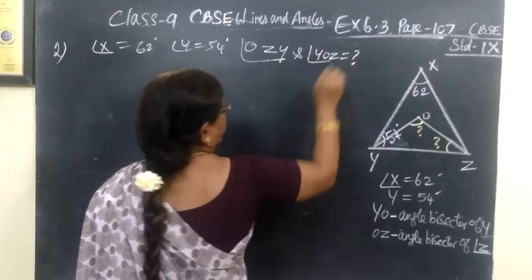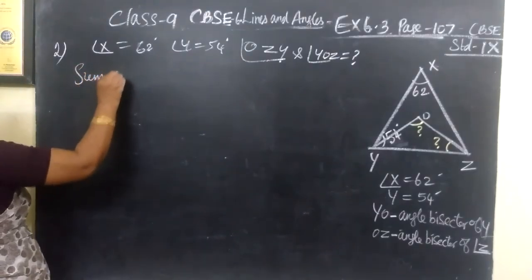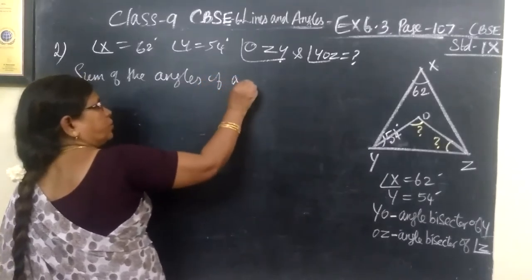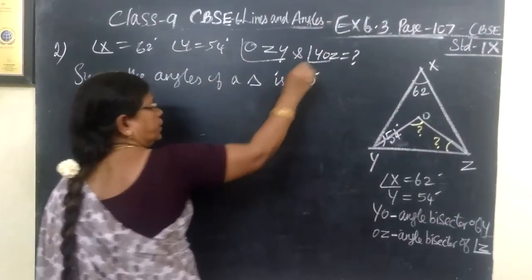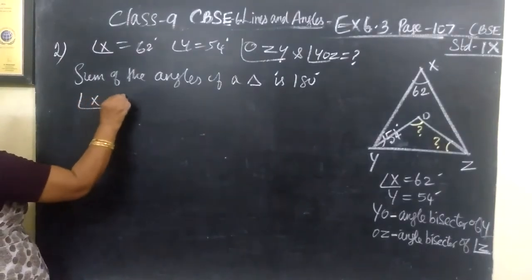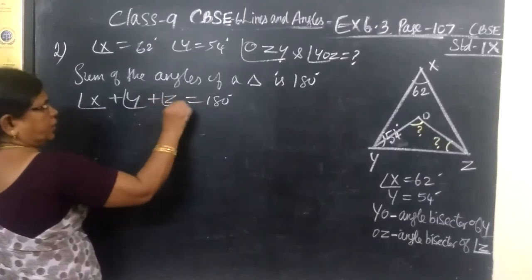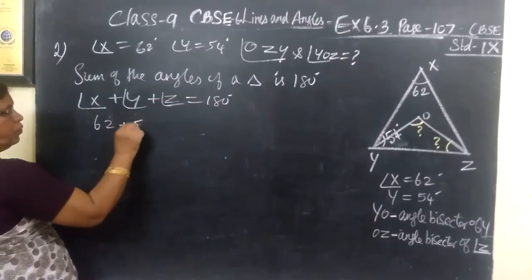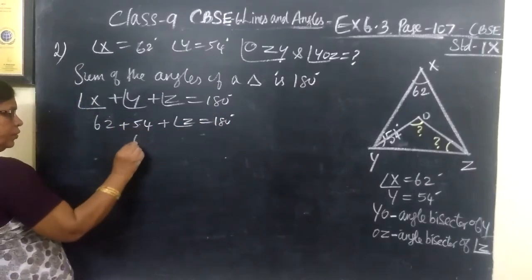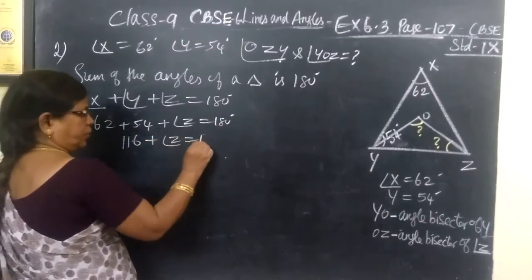We know sum of the angles of a triangle is 180 degrees. So, according to the sum, X plus Y plus Z equal to 180 degrees. X is 62, then 54, then Z equal to 180. So, 116 plus Z equal to 180.